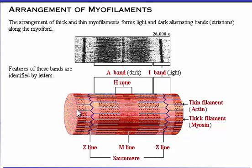The region of the myofibril between two successive Z-lines is called a sarcomere. It is the contractile unit of a muscle cell. You will see how a muscle cell contracts in a later topic — the sliding filament theory.